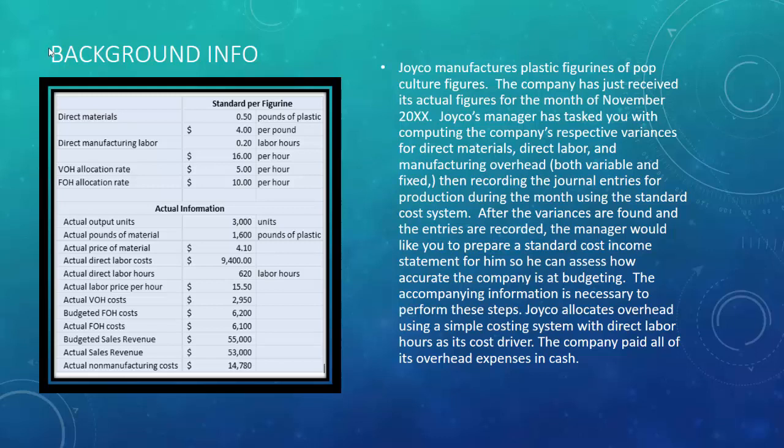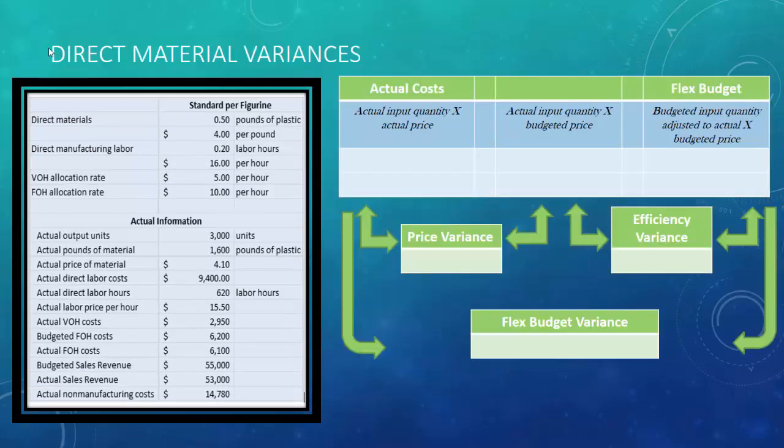One last piece of information needed for overhead variances: Joico allocates overhead using direct labor hours as its cost driver, and they paid all actual overhead expenses in cash. That's a lot of background information. The first thing we need to do is figure out our direct materials variances by filling in the table.